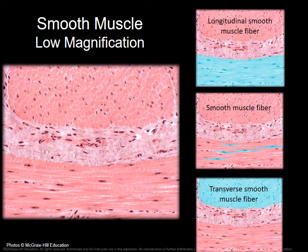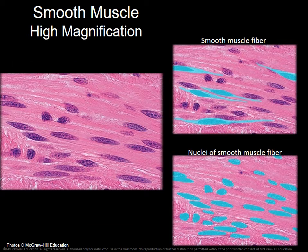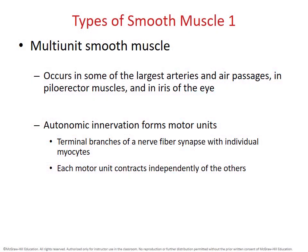Under the microscope, smooth muscle shows spindle-shaped cells with a single centrally located nucleus — the dense bodies and plaques are submicroscopic at the molecular level. Smooth muscle tissue comes in two types that differ considerably in how they're controlled. The first is multi-unit smooth muscle tissue, which is the less common type.